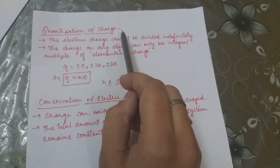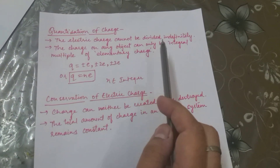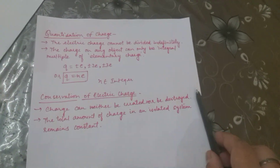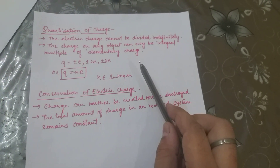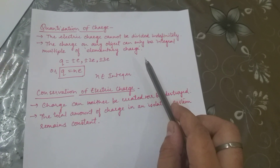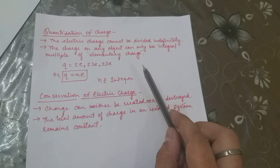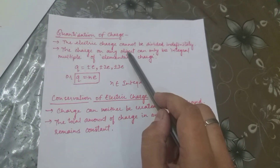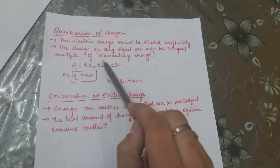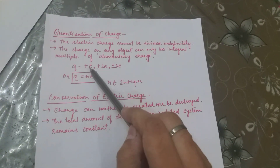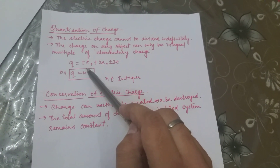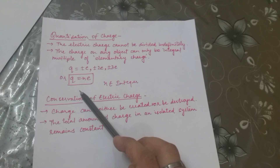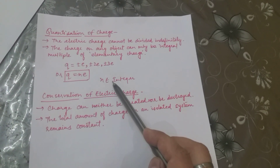The next topic is quantization of charge. Electric charge cannot be divided indefinitely — the minimum amount of charge that can be present on any object is the elementary charge, e, which equals 1.6 × 10⁻¹⁹ coulombs. The charge on any object can only be an integral multiple of the elementary charge, meaning q = ±e, ±2e, ±3e, and so on. We can write this as q = ne, where n is an integer.